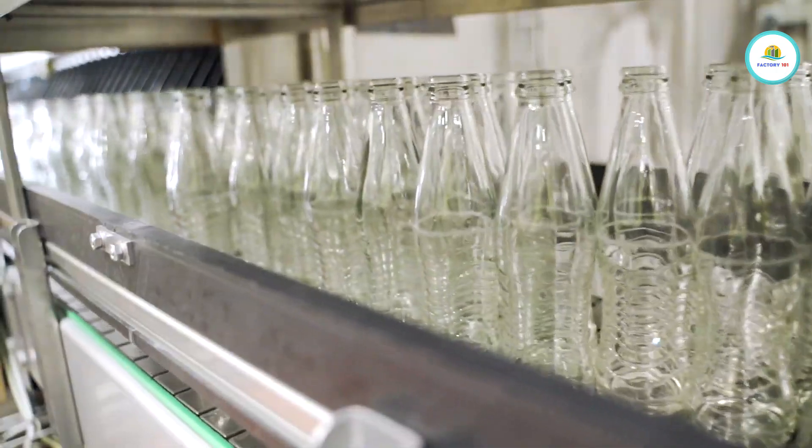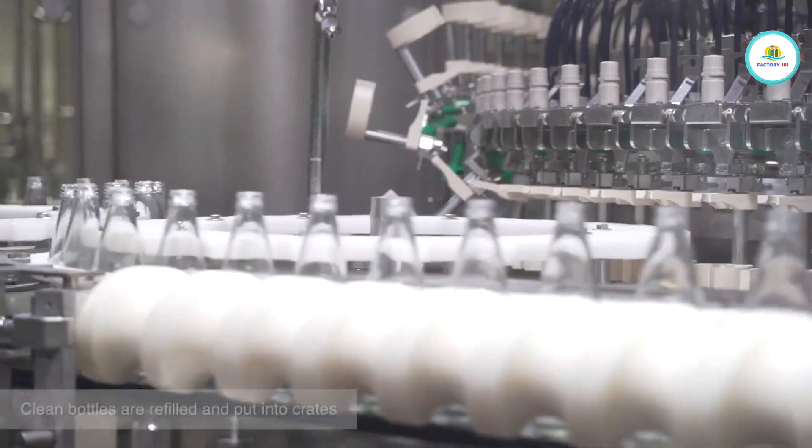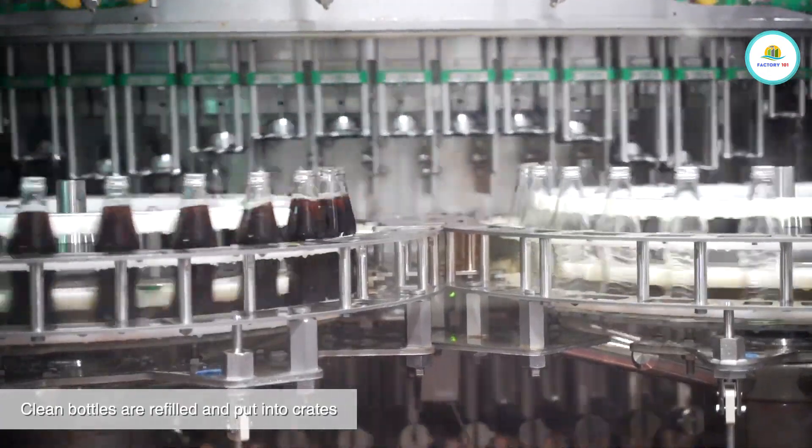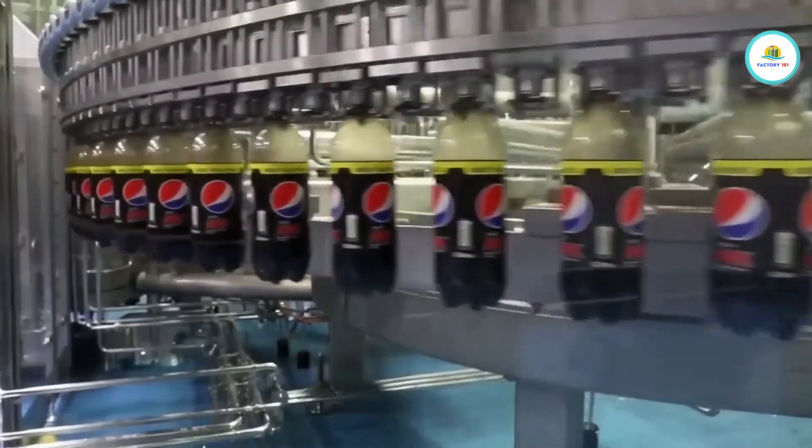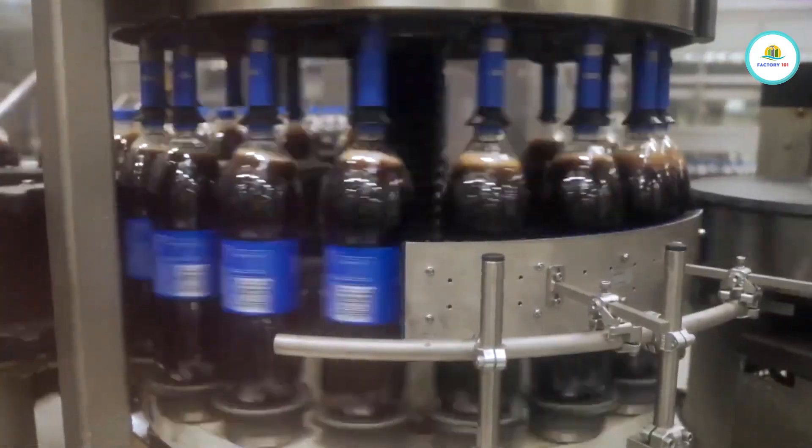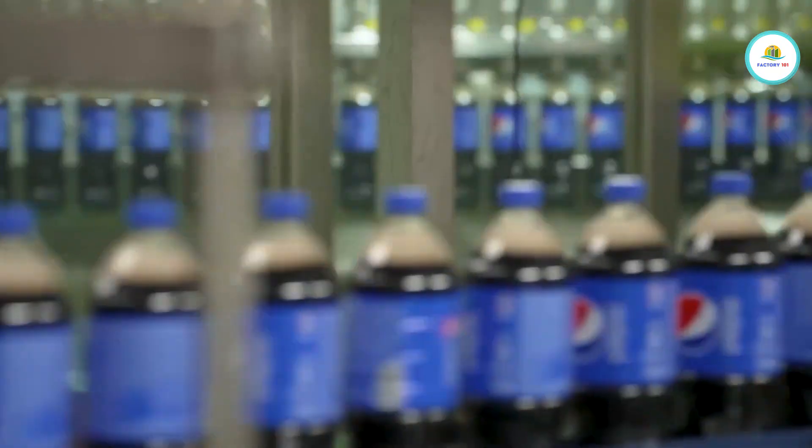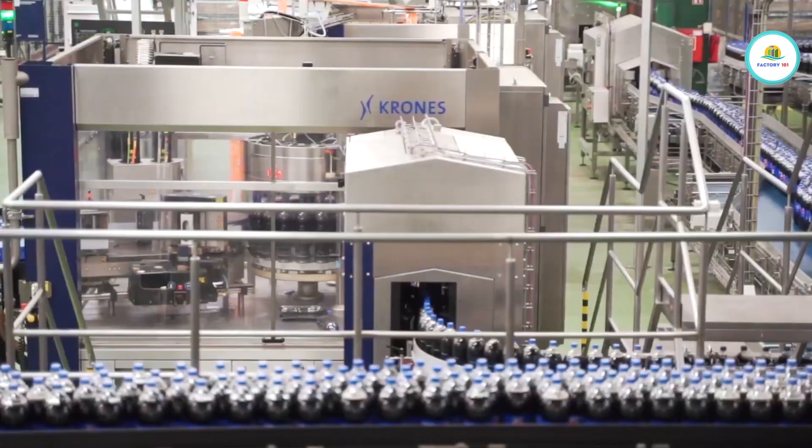Before bottles are filled, they're thoroughly cleaned using high pressure rinsing systems, even if they're newly made. After filling, bottles are immediately capped using a rotary capping machine that seals in the pressure to preserve carbonation. Then the labeling begins, thousands of labels per minute, applied with laser precision. Each bottle gets its signature blue, red, and white branding, perfectly aligned and camera checked.